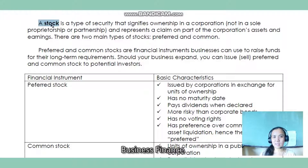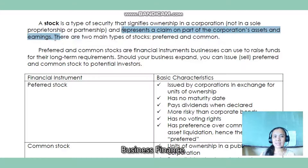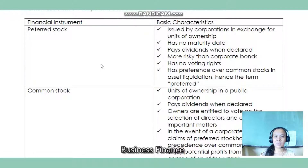Next is stock. Stock is a type of security that signifies ownership in a corporation — not in a sole proprietorship, not in a partnership, but in a corporation. It represents a claim on part of the corporation's assets and earnings. There are two different types of stocks: preferred stock and common stock. These stocks are financial instruments businesses can use to raise funds for their long-term requirements. If your business needs to expand, you can issue or sell preferred or common stocks to potential investors.